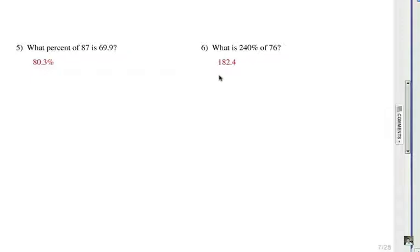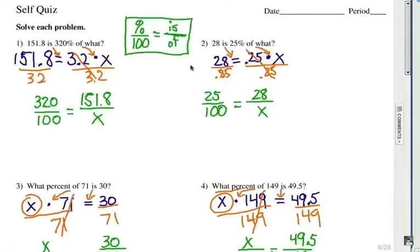Now let's back up and I want to show you the proportion method for each of these. The percent proportion is always the percent number over 100 equals 'is' over 'of', or part over whole. So if we consistently use that structure, here's what it looks like.